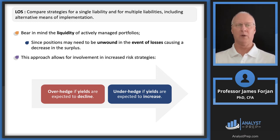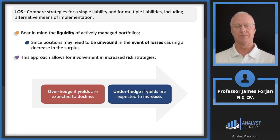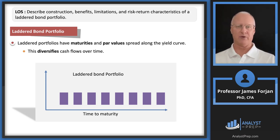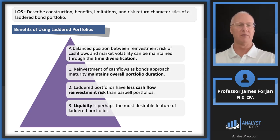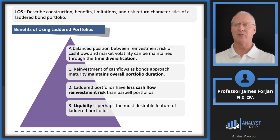Liquidity is important for both passive bond investment and actively managed portfolios. If there's a dramatic yield increase we may have to unwind our position. We'll over-hedge if yields are expected to decline and under-hedge in the other direction. A laddered portfolio provides time diversification, duration maintenance, better management of reinvestment rate risk due to staggered cash flows, and greater overall liquidity.